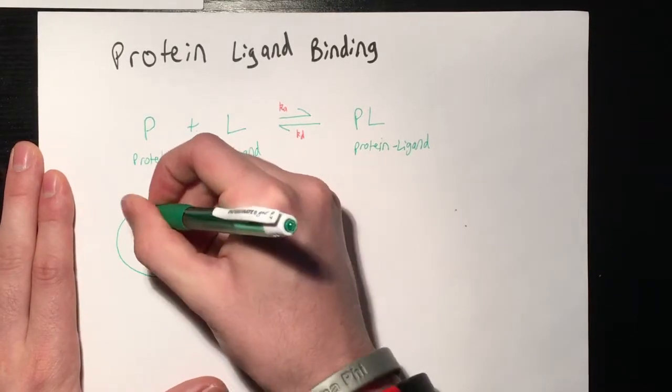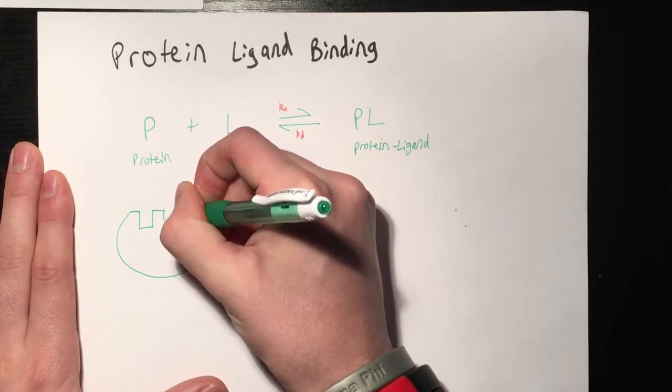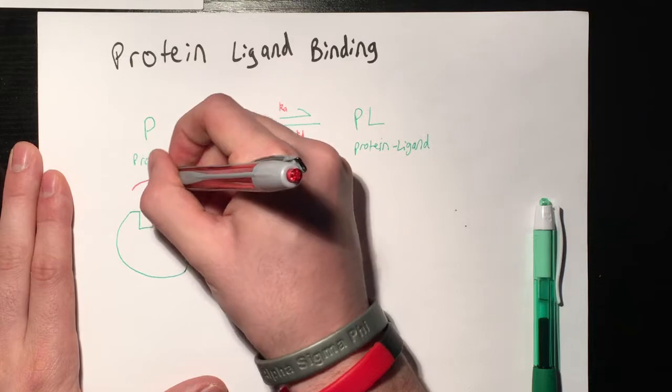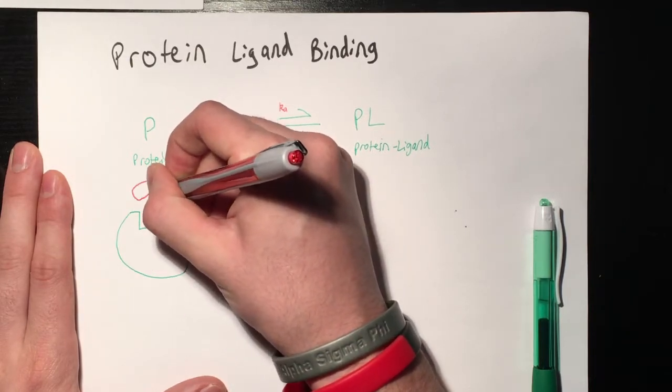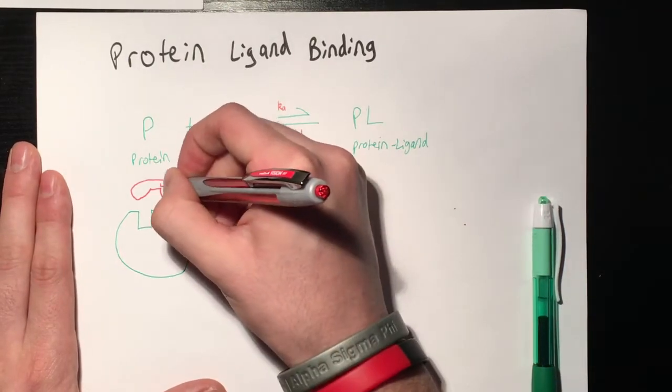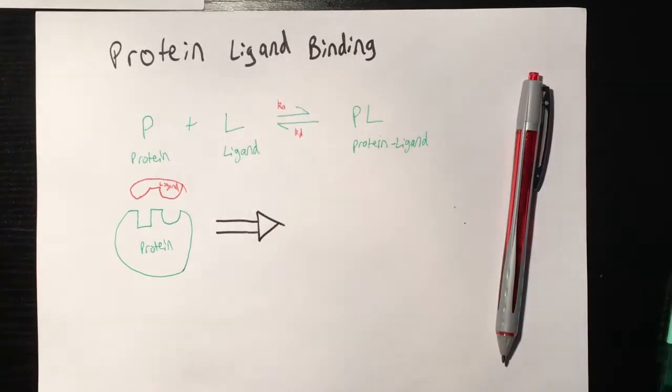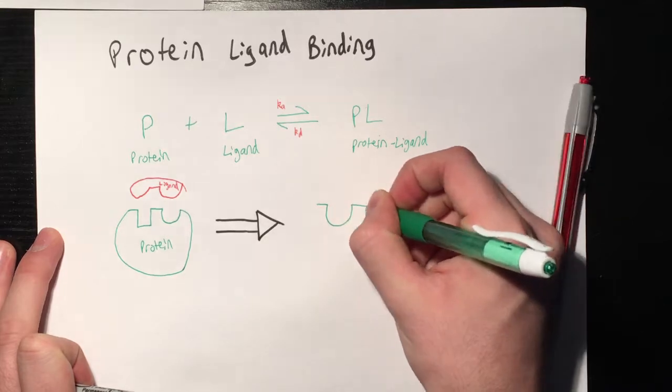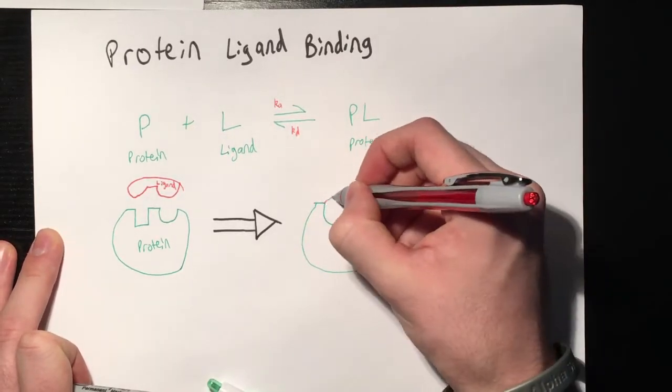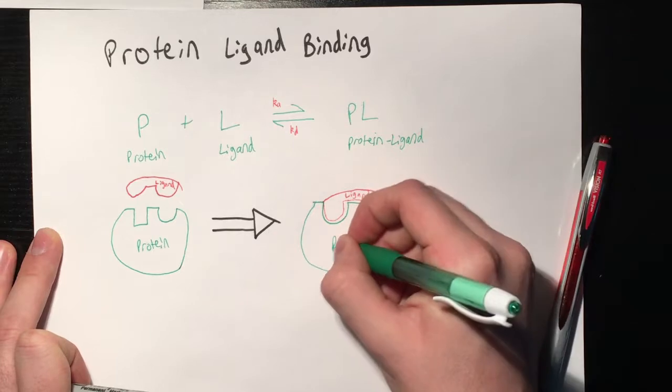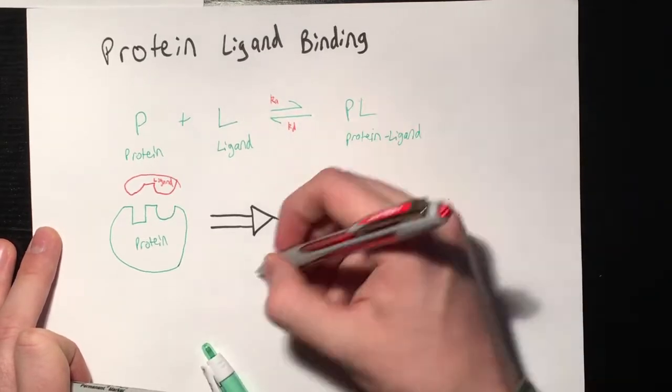There's two theories for how this works. The lock and key method, where the ligand and the protein binding site have the same conformation and fit together perfectly. And then there's the induced fit model, where the binding site has a general conformation that matches the ligand, but can change its shape to fit it. And that's the theory that has been accepted as how this process works.